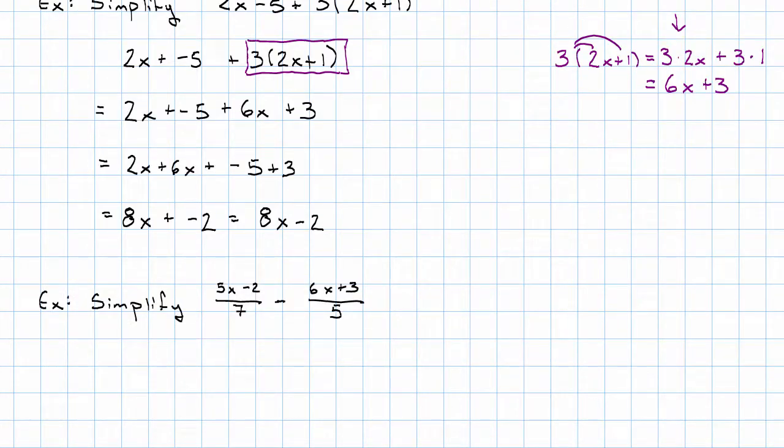Let's see another example. Let's say I want to simplify the quantity 5x minus 2 all over 7 minus the quantity 6x plus 3 all over 5. What should I do? Well, I see division here.